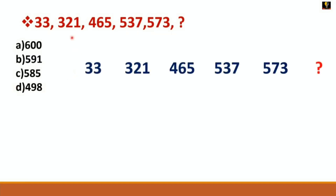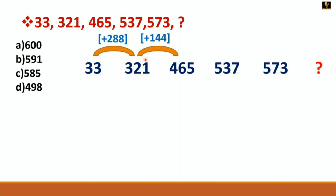Now observe: the series is 33, 321, 465, 537, 573. In number series problems, you should first find the difference. Here: 33 + 288 = 321. Then 321 + 144 = 465. You can observe that 288 divided by 2 = 144. So the differences are halving each time.